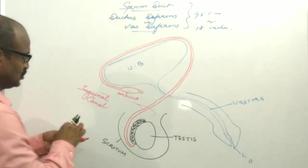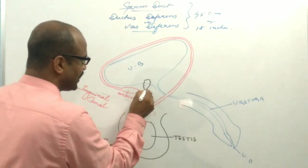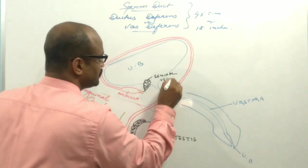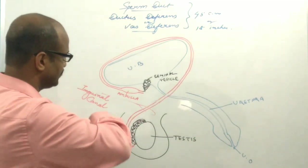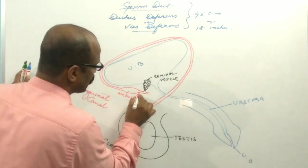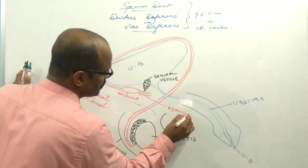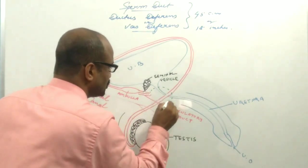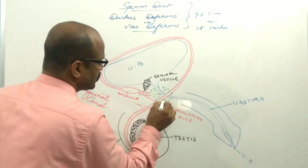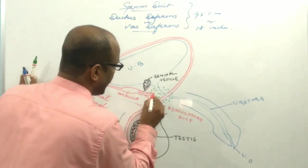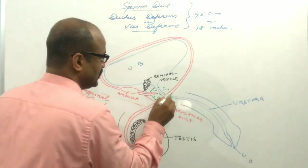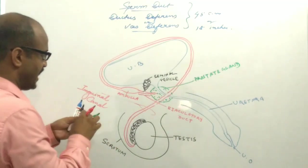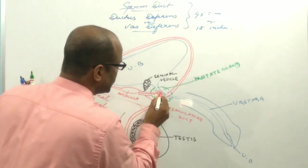Then it receives the duct of the seminal vesicle. After receiving the duct from the seminal vesicle, it forms a short duct known as the ejaculatory duct. This ejaculatory duct passes into the prostate gland, and the ejaculatory duct then empties into the urethra.